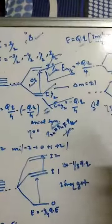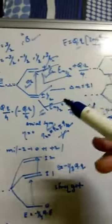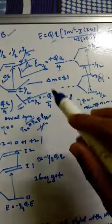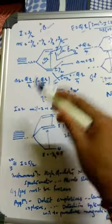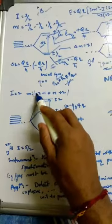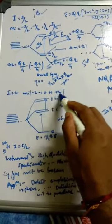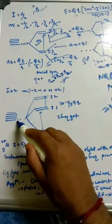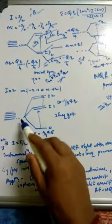This is how, in NQR, splitting takes place in the absence of a magnetic field due to the internal atomic structure. Similarly, we go from I = 1 to I = 3/2, and now to I = 2. For I = 2, the mI values are −2, −1, 0, +1, +2 — five values.